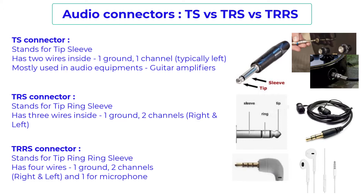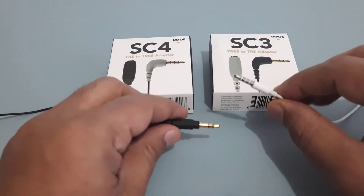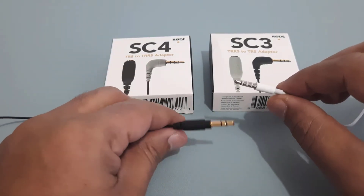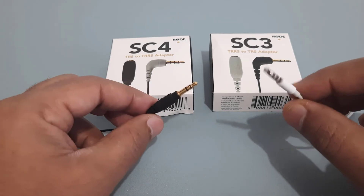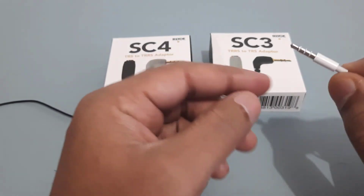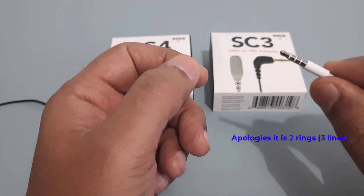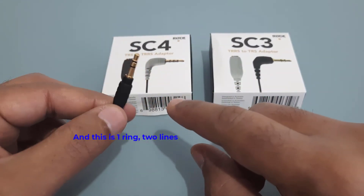The links for these adapters are given in the video description, so feel free to check them out. I'm showing you these adapters in the video right now. I don't have a TS connector with me because I feel that's something people don't deal with every day. The two we mainly deal with are TRRS and TRS. This is my iPhone earphone — it has three rings, so this is a TRRS connector. And this is my lavalier microphone which has two rings — this is a TRS connector.